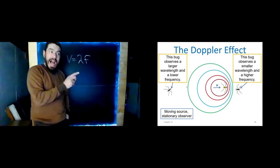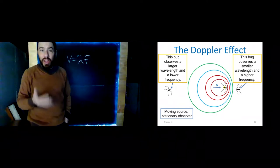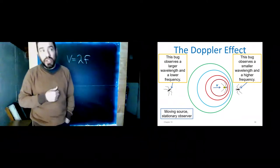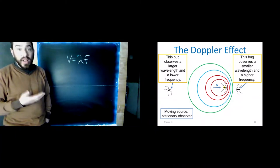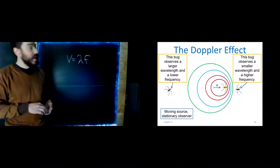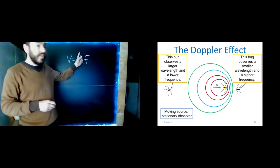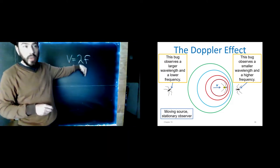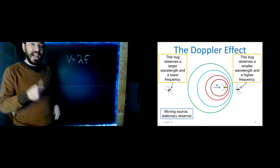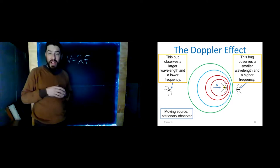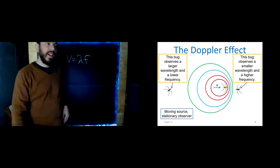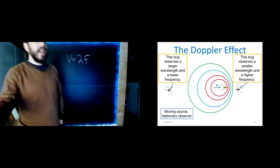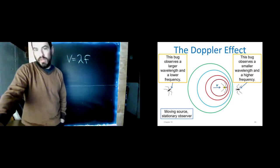This is analogous to the fire engine as it's approaching. We hear a higher frequency and therefore a shorter wavelength. However, the bug that's in back, this bug observes a larger wavelength. Again, you can just look at the picture and see that as those ripples approach that bug, they're more spread out than they would be if the source of the wave was not moving. And so we see a larger wavelength. That means a smaller frequency. That's analogous to standing behind the fire engine. As it's moving away from us, we hear a lower pitch. And so this simulation is to help us visualize a moving source with a stationary observer.